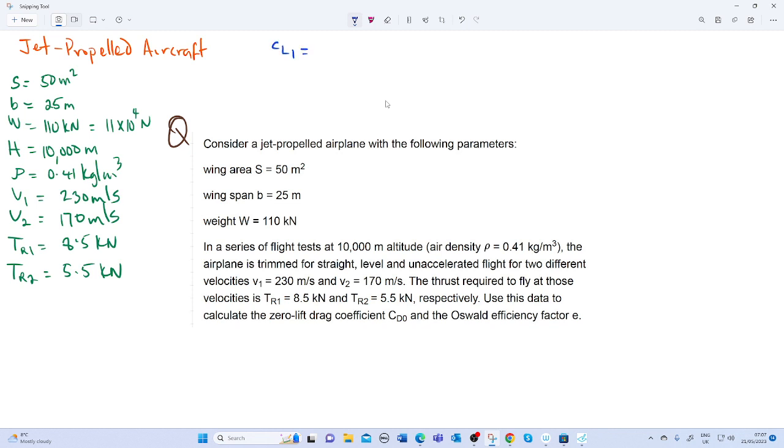Therefore, CL1 equals 2W over ρSV1 squared. That gives us 2 multiplied by 1.1 times 10⁴ over 0.41 times 50 times 230 squared. Our CL1 equals 0.2029.